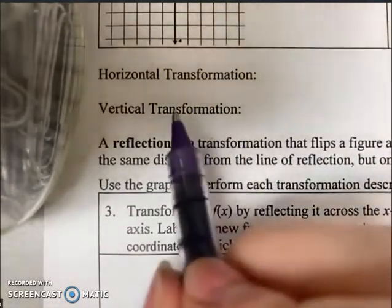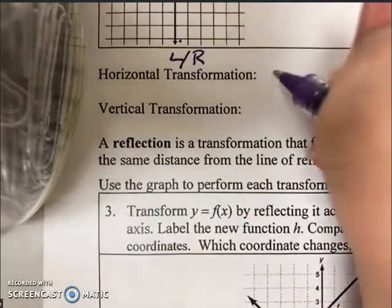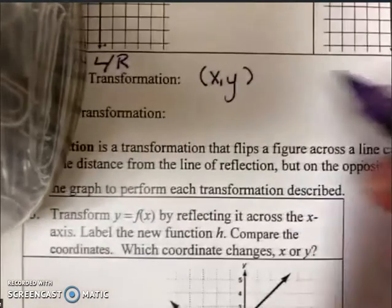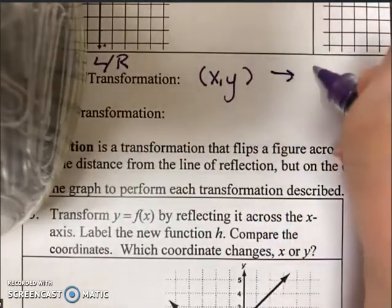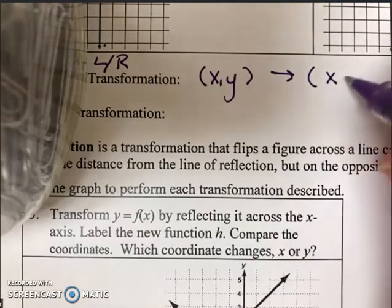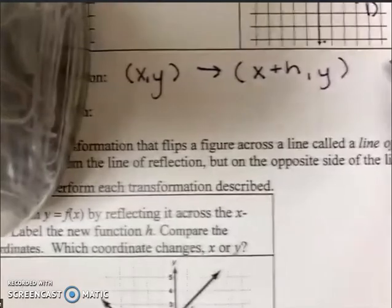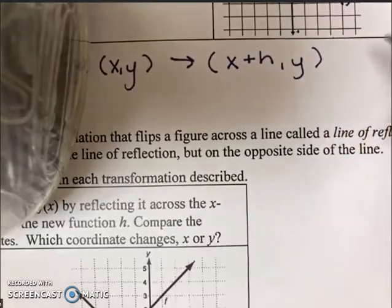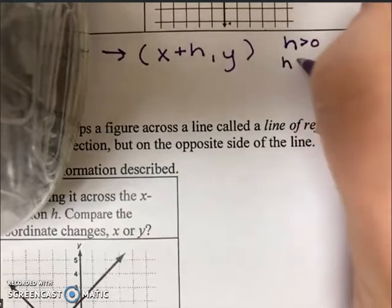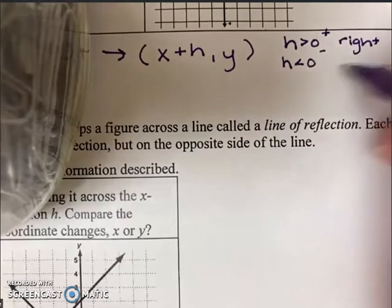Not only can you move along the coordinate plane, but you can also add or subtract to the X and Y values depending on the translation. That means we can write a set of rules. When you have a horizontal transformation—moving left or right—we can add or subtract an H value. So (x, y) → (x + h, y), where H is that movement. If H is positive, it moves right. If H is less than zero, so it's negative, it moves left.